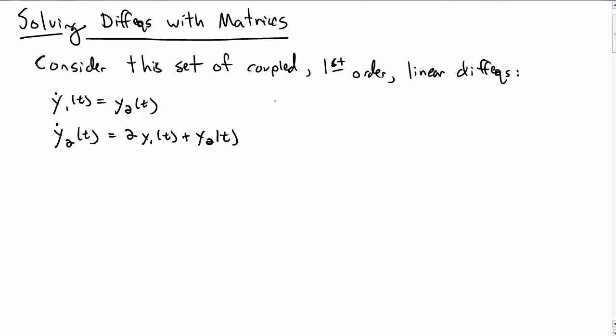Consider this set of coupled first-order linear differential equations: y1 dot equals y2, and y2 dot equals 2y1 plus y2. So how do we solve a differential equation like this, where the differential equations are coupled?